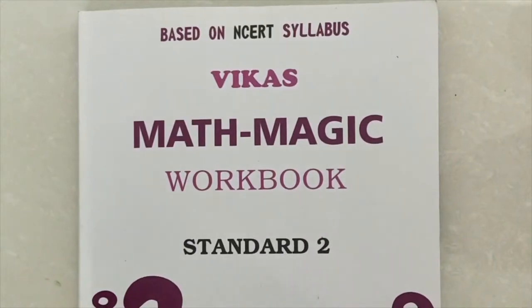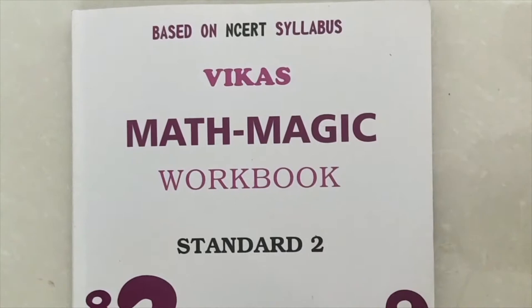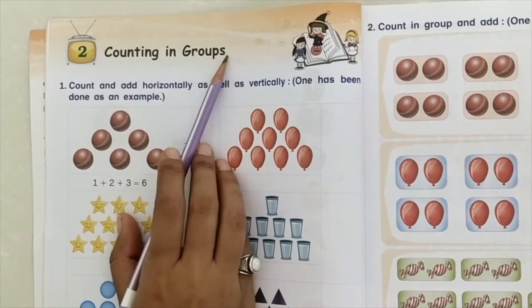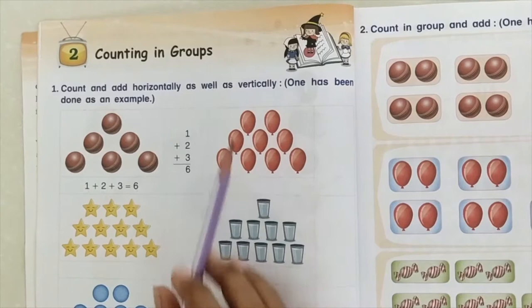Hello students, today we start our Maths Magic Workbook, Chapter number 2: Counting in Groups. Count and add horizontally as well as vertically. First of all, we count horizontally.